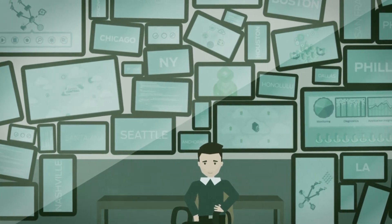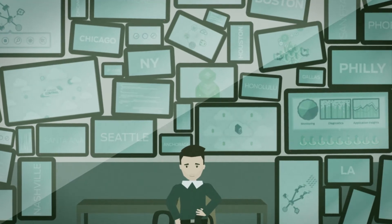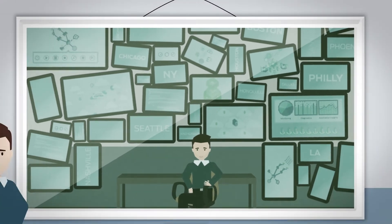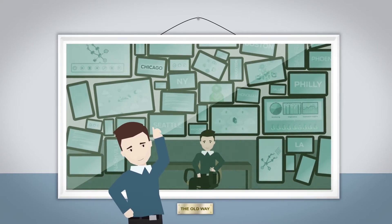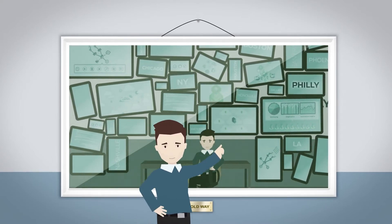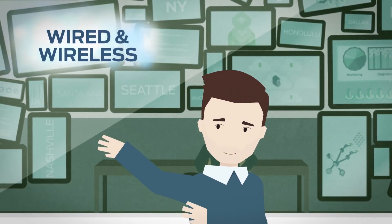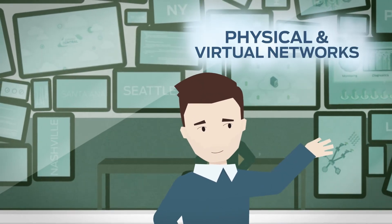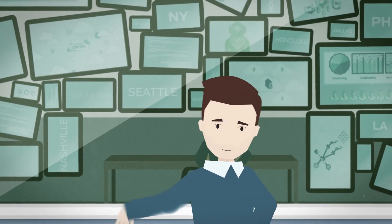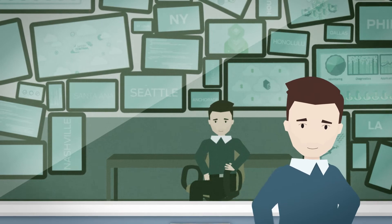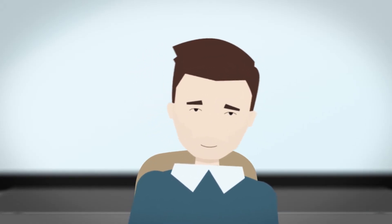Here's what things used to look like. Each of those monitors used to represent yet another management tool for my various networks. That was the one in our New York office. That was the data center in Chicago. And that was the virtualized stuff we're running in Philly. Switches and routers, wired and wireless, physical and virtual networks, the cloud — I've got to keep an eye on it all, which used to take dozens of tools and a lot of manual synchronization. I've logged a lot of miles in this old swivel chair.